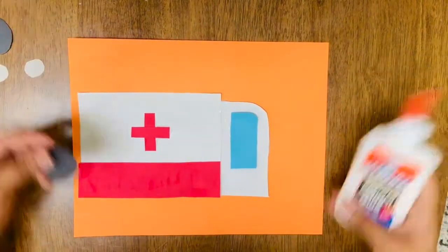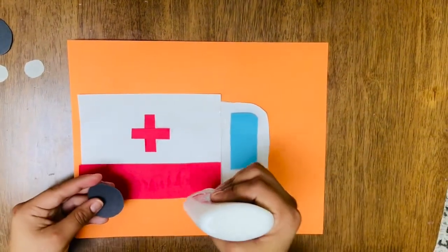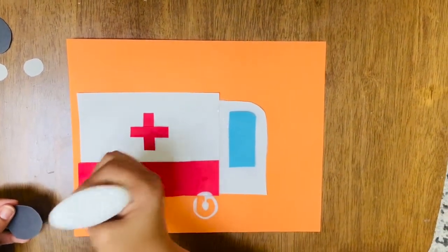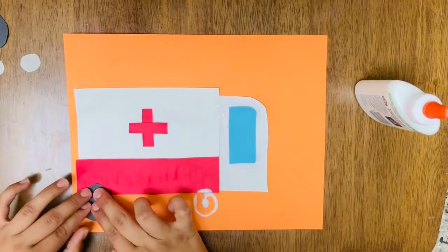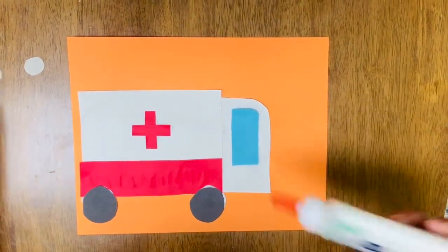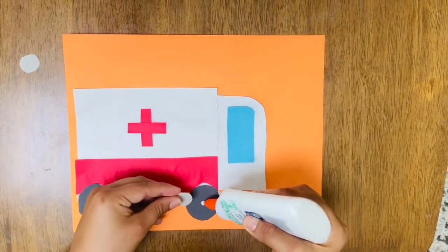Alright, now our wheels so our ambulance can drive and save lives. Alright, we're going to do one here, one here, and then we're going to get the little gray spots and put them in the middle.